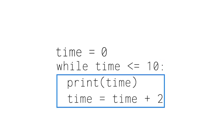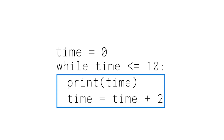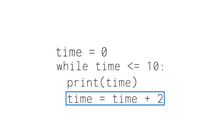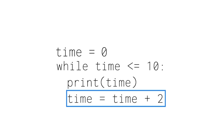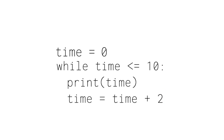Just like a for loop, a while loop has an indented body of actions to take while the loop iterates. The intention of this code is to print the value of a variable representing time and increase its value by 2 until it becomes greater than 10. Since while loops do not include a sequence to iterate through, we have to explicitly define how the loop variable changes in the body. In this while loop, we increase the loop variable time by 2 every iteration — because we only want to print the time every 2 minutes — so the loop prints all even numbers less than or equal to 10.